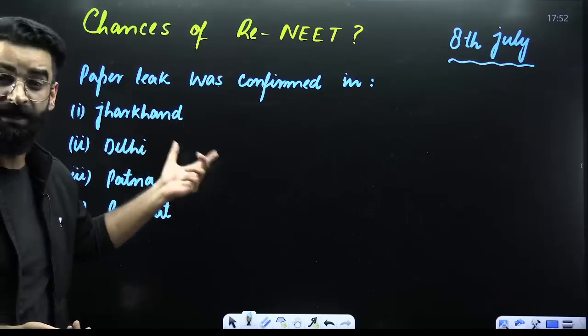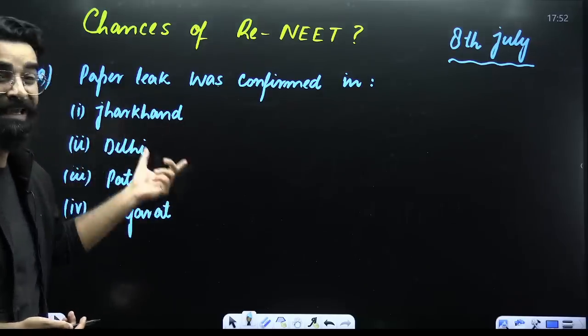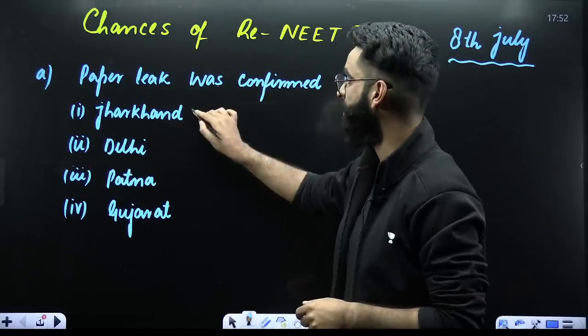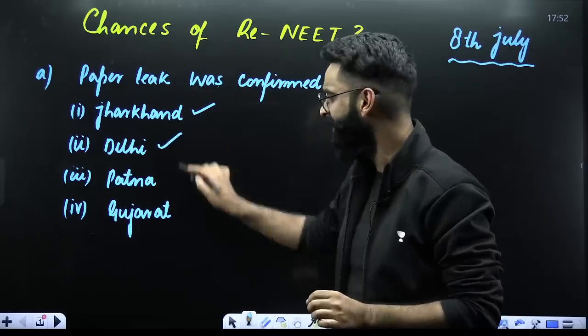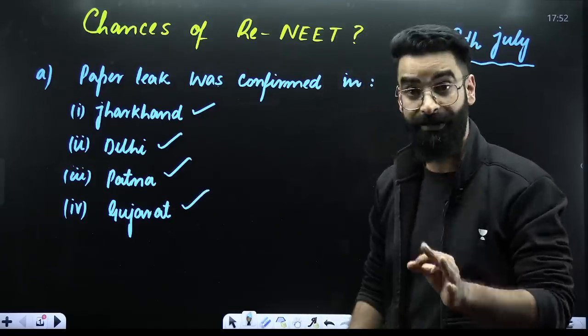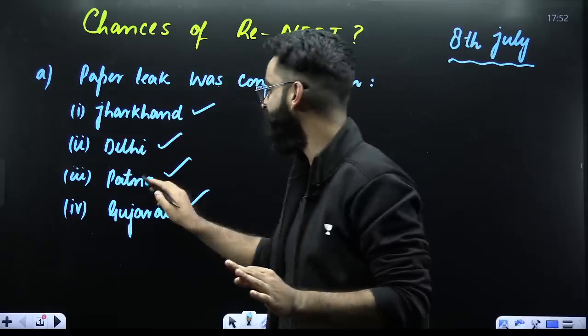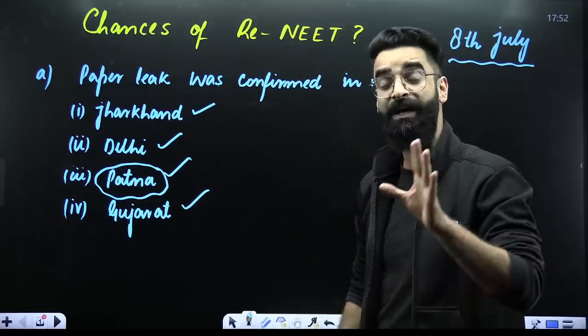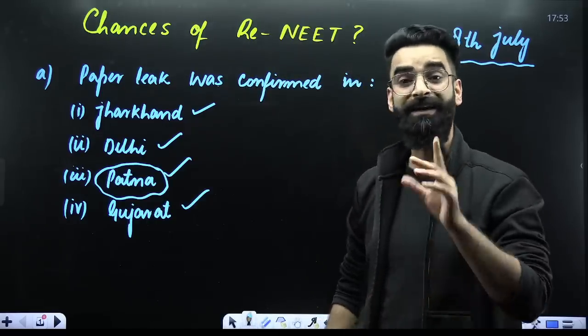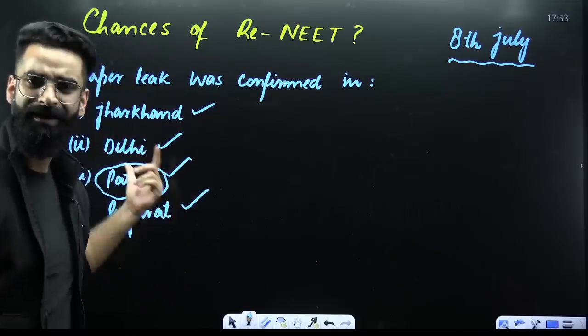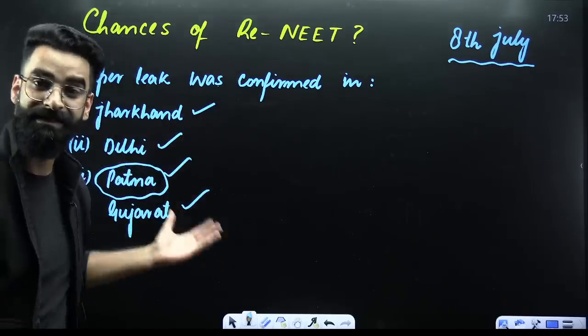Point number two, it was confirmed that the paper leak has happened not just in Bihar. It has happened in the state of Jharkhand, Delhi, Patna, and Gujarat. Till now, we only knew that the paper leak happened in Patna. But in yesterday's video, we clearly got to know that the paper leak has not only happened in Bihar, it has happened in other states too.